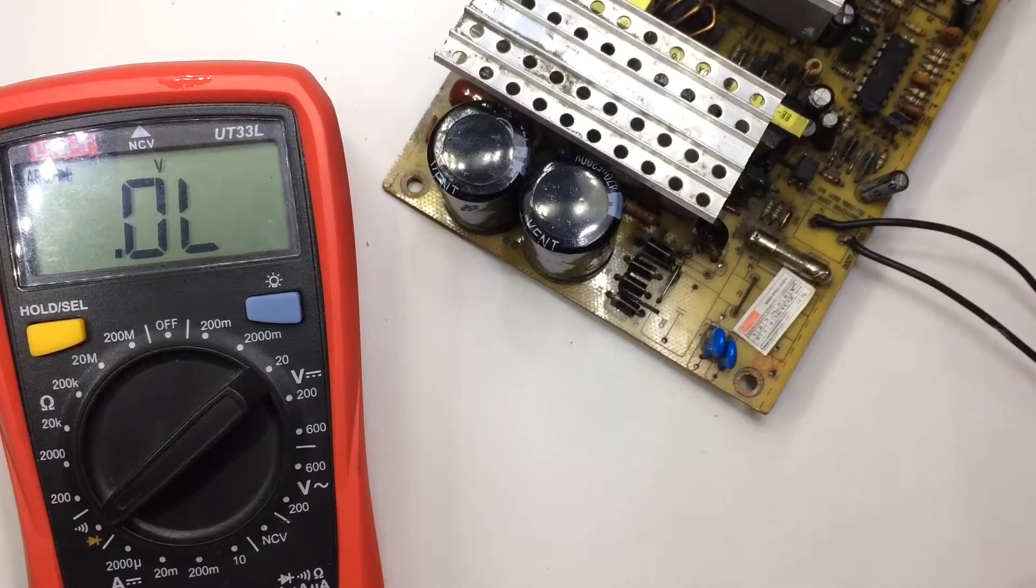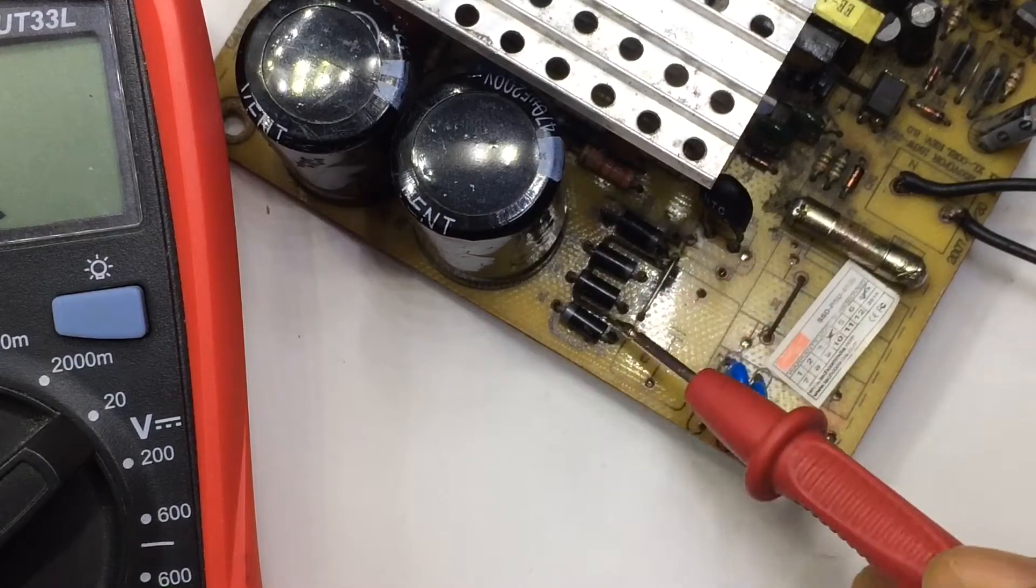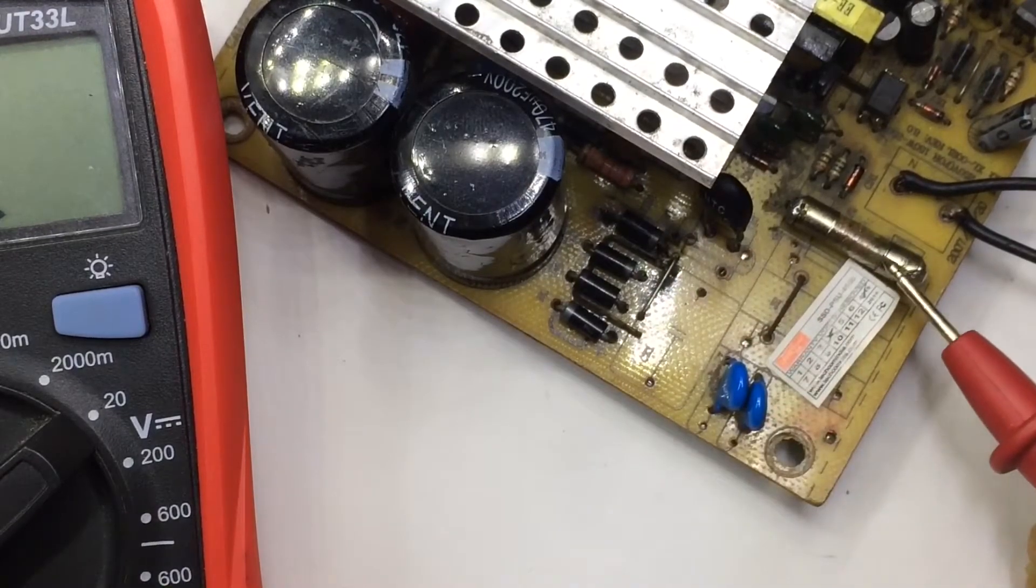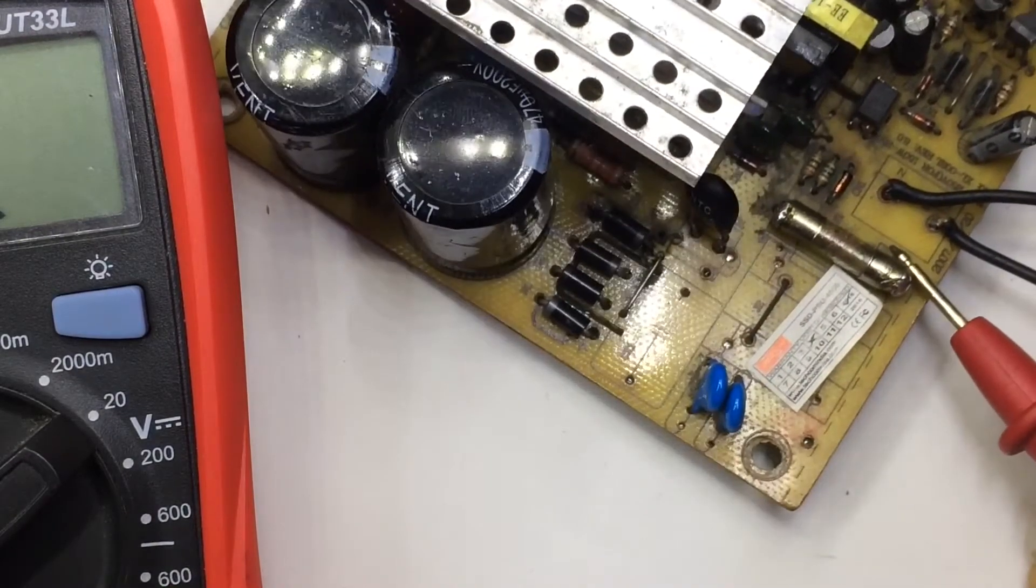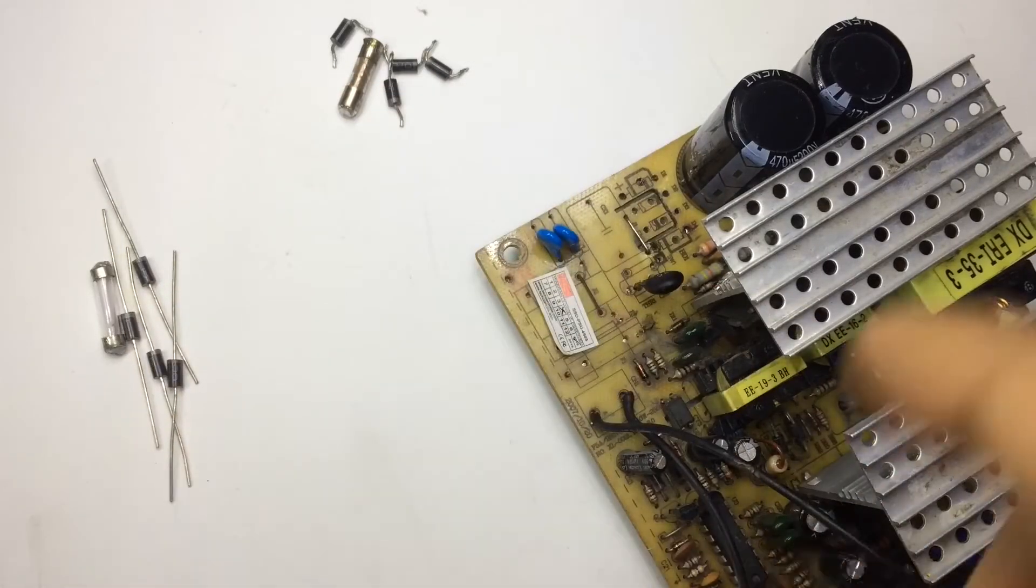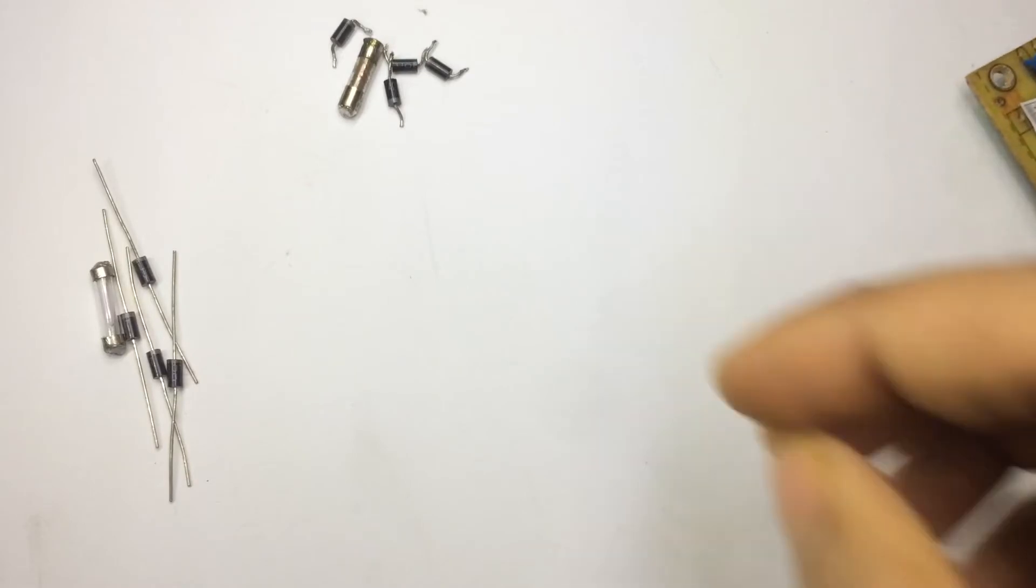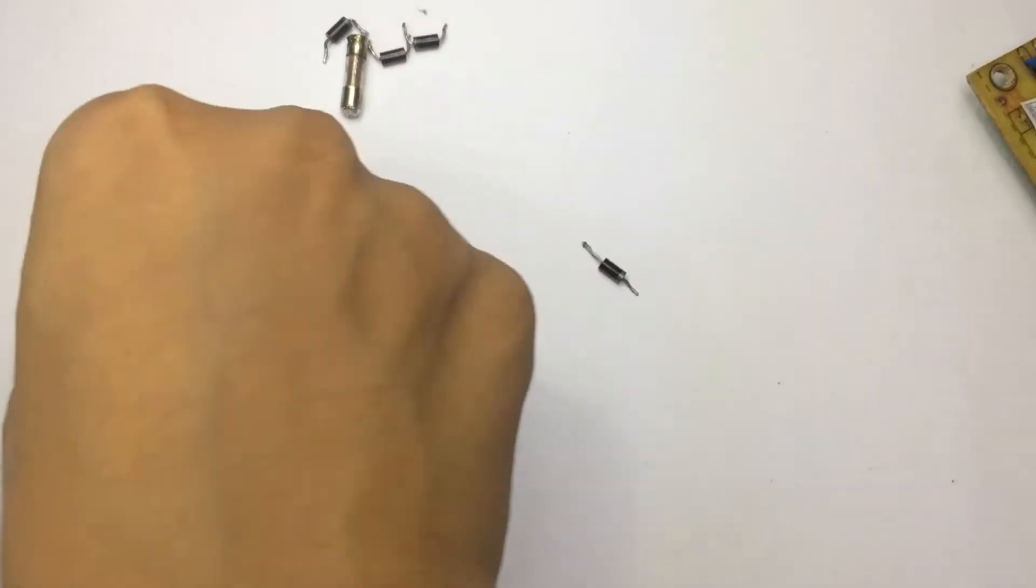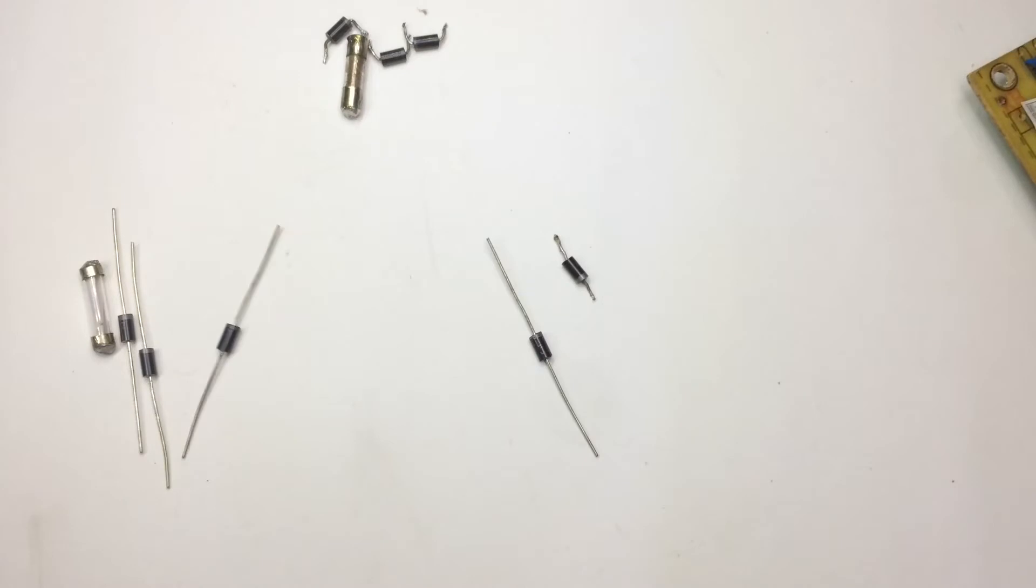So let's see what happened after replacing the whole bridge rectifier and the fuse. I removed the bad components and these are the bad ones, and these are the new ones. Let's see how to test a diode, I mean a good diode and a bad diode.